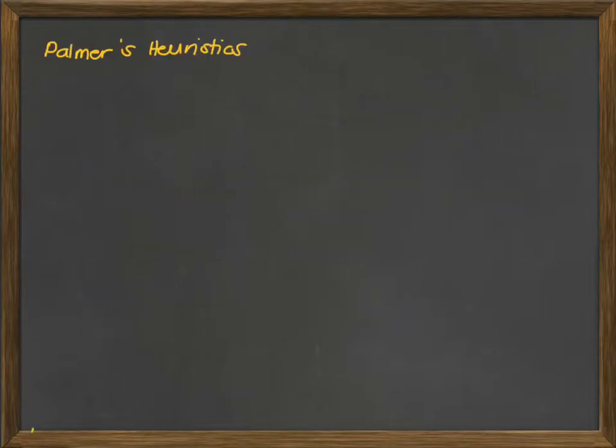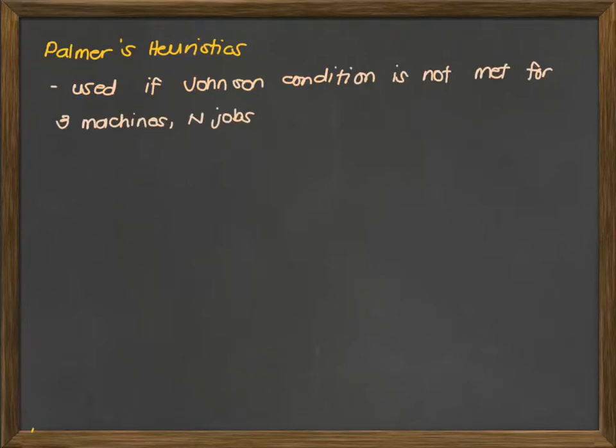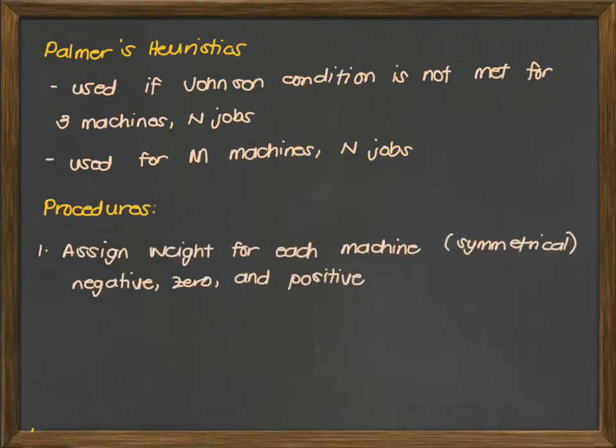To define Palmer's Heuristics, this is used if the Johnson's condition is not met for three machines and N jobs. And of course, this is used for multiple machines and multiple jobs. So if you have four machines, five machines, automatically that is under Palmer's Heuristics or Palmer's Rule.